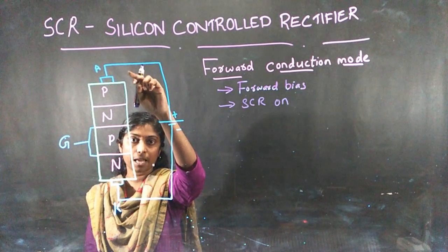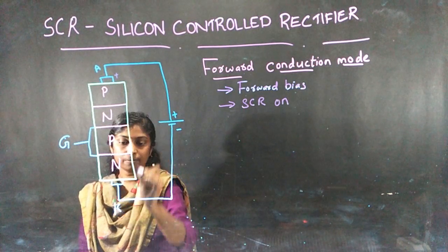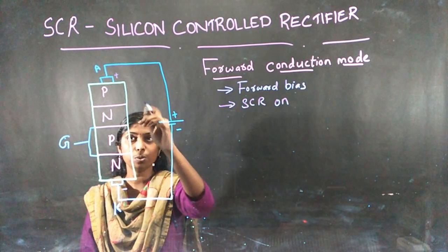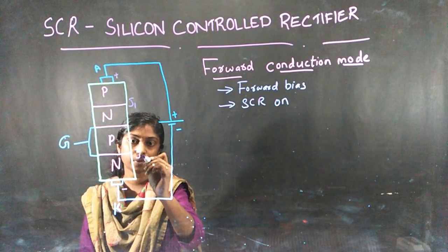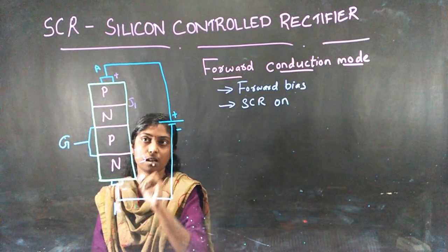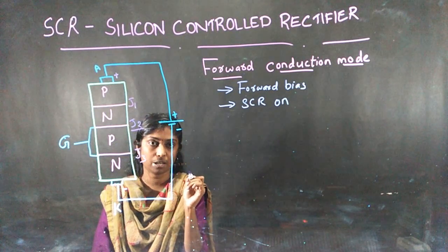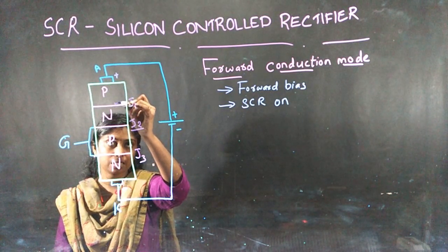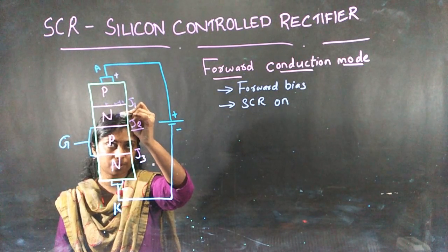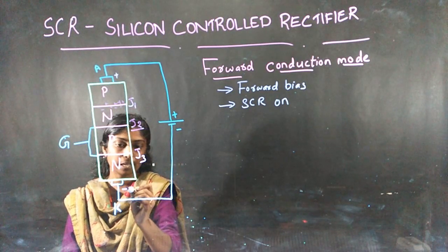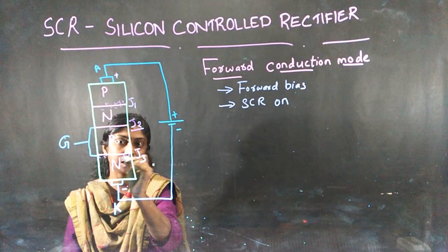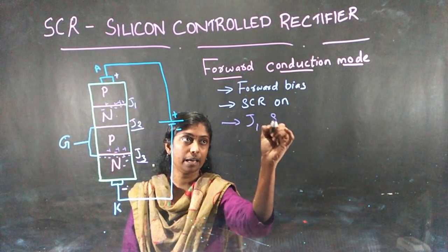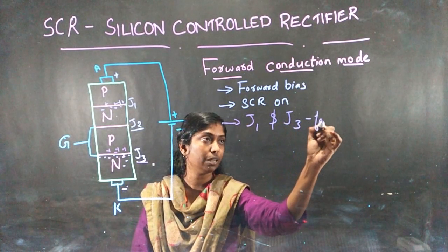We are giving forward bias across anode and cathode, so here it is positive and here it is negative. As we have discussed before, same as in forward blocking mode, here also J1 and J3 junctions will be forward biased. Holes will be getting pulled towards this N region and it will attract the electrons from the N region — J1 is forward biased. Same way, here it is negative, so electrons will be moving towards the J3 junction, attracting the holes from this P region, and J3 will be forward biased. That means J1 and J3 junctions are in forward biased condition.